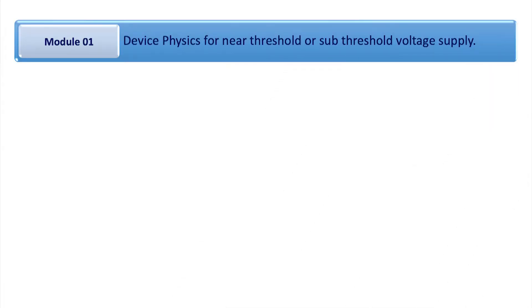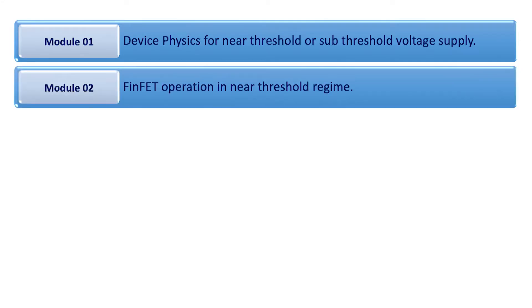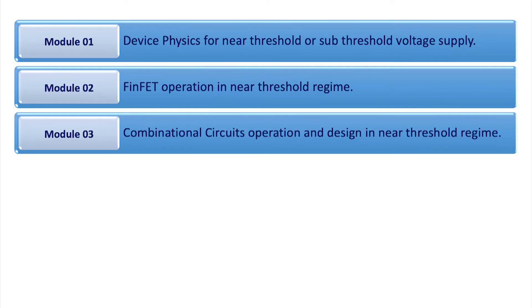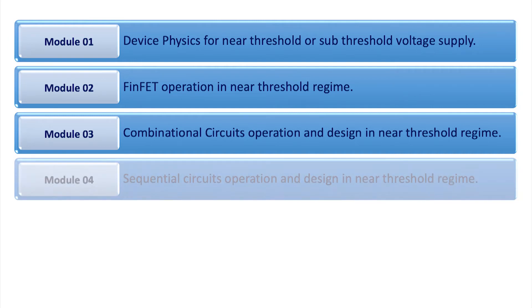In this course, we will follow a modular approach. Module 1 will introduce device physics for near-threshold and sub-threshold voltage supply. Module 2 will introduce FinFET operation in weak inversion and moderate inversion. Module 3 will introduce combinational circuit operation and design methodologies in the near-threshold voltage regime. Module 4 will discuss sequential circuits, their operation and design in the near-threshold voltage regime.